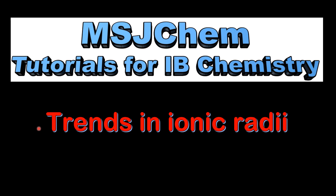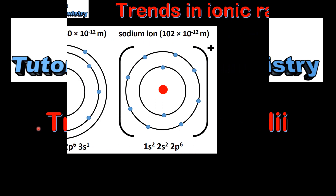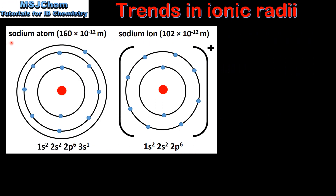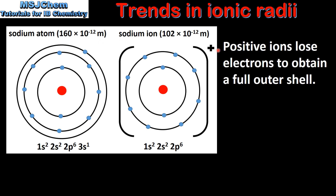This is MSJChem. In this video I'll be looking at trends in ionic radii. We'll start by comparing positive ions and we'll compare the sodium atom and the sodium ion. Positive ions lose electrons to obtain a full outer shell.